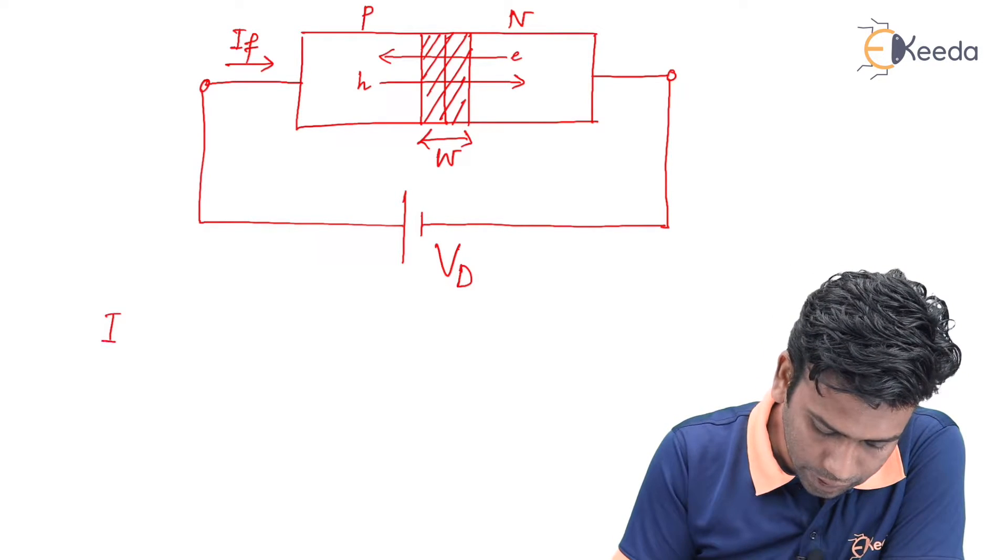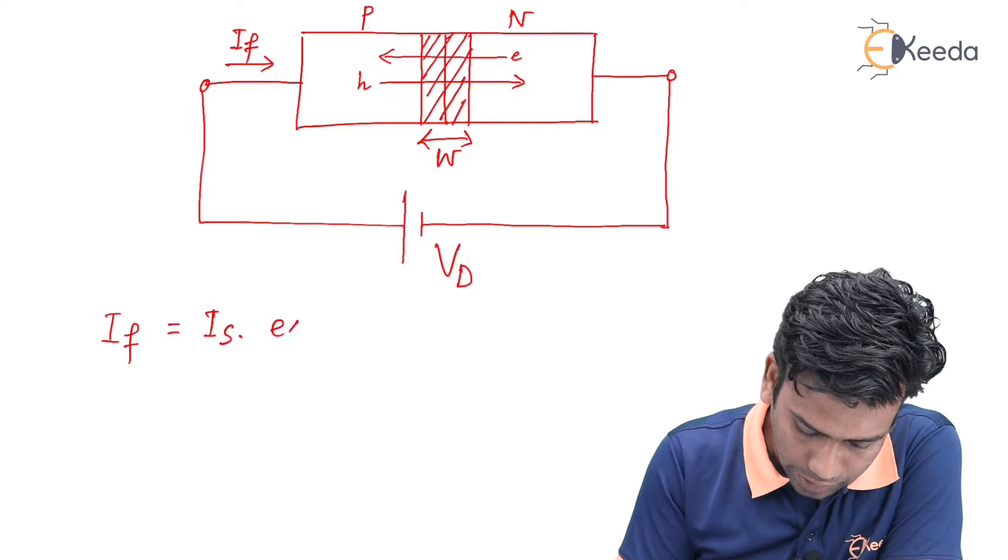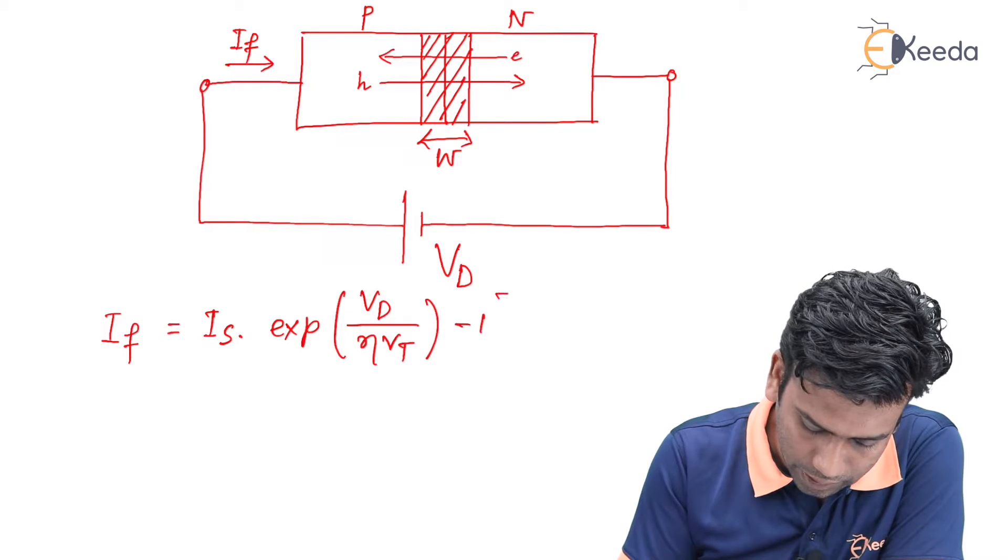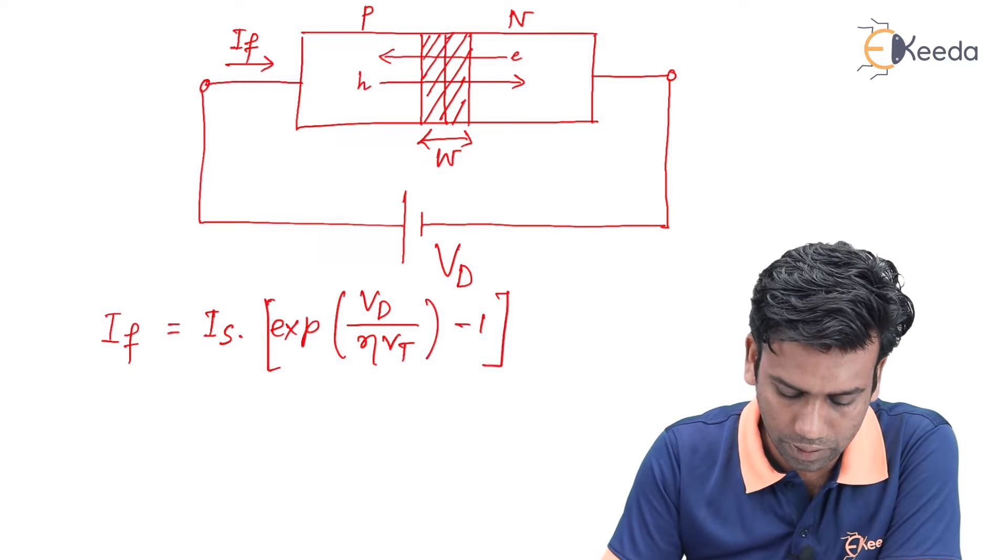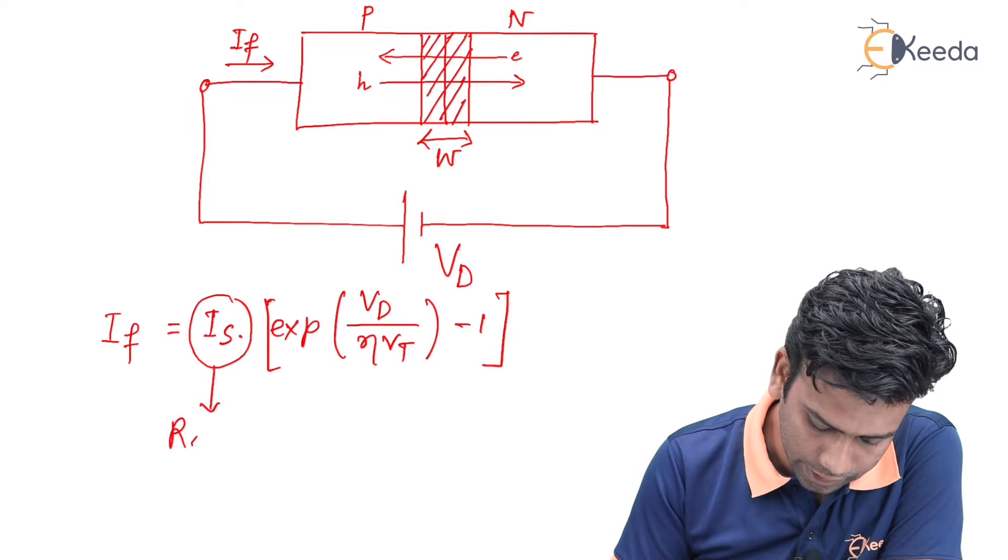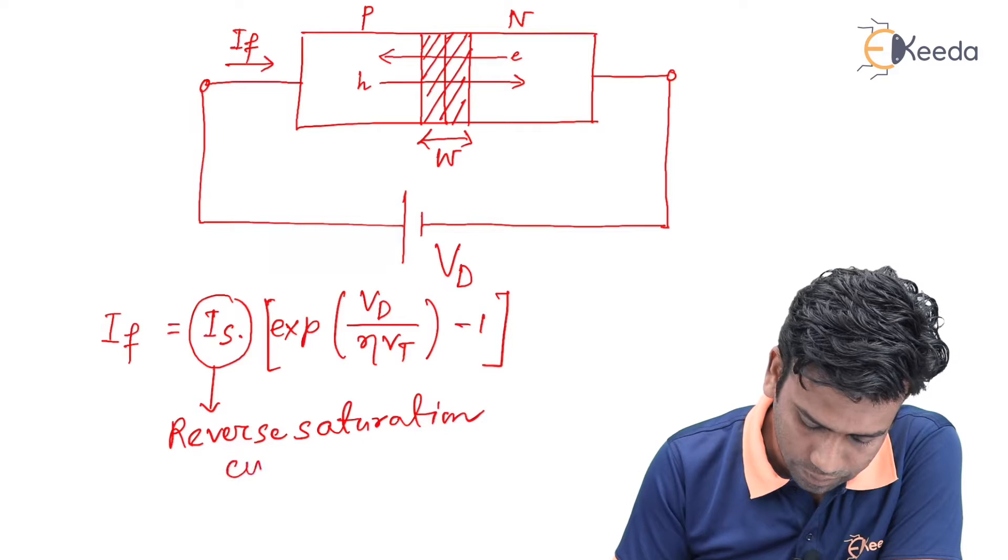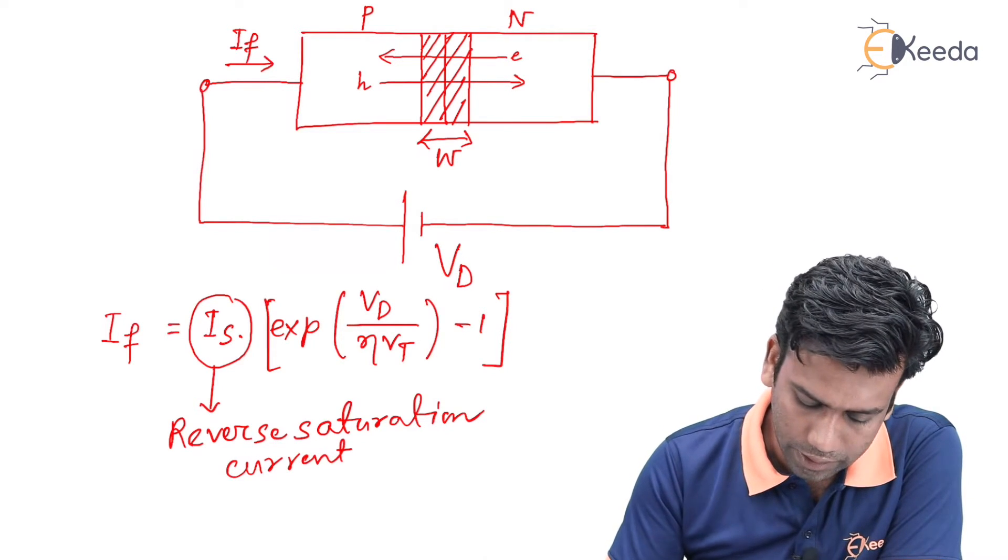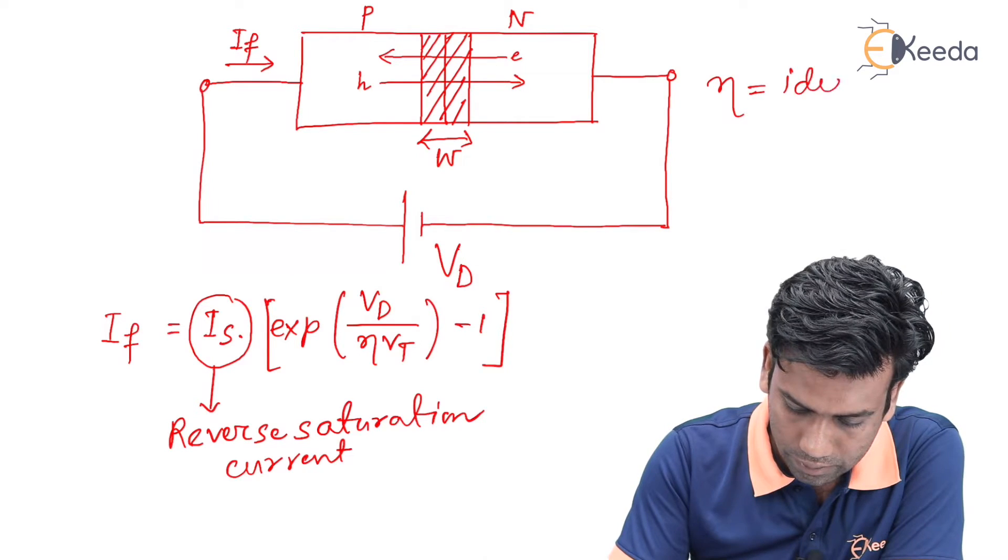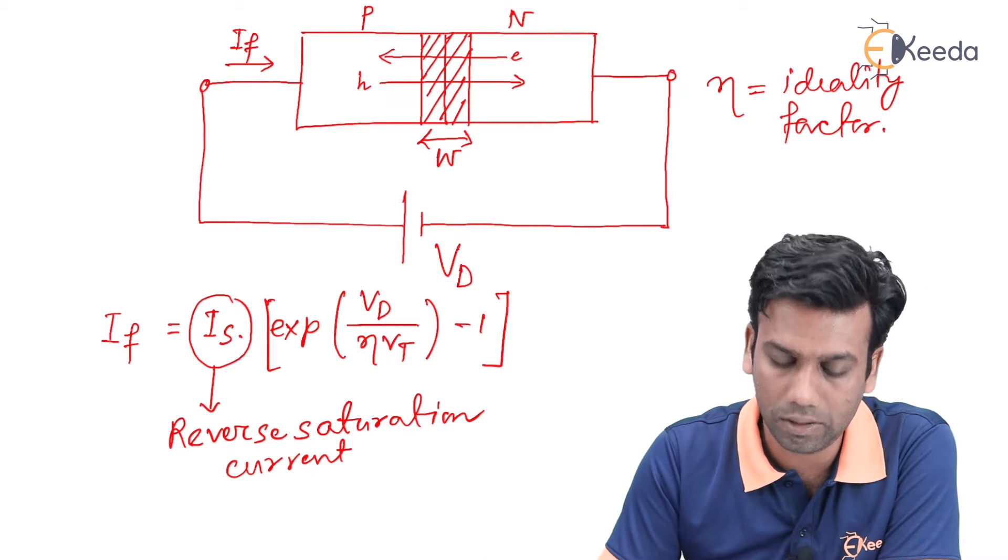We know the diode current equation or forward current equation: I_f equals I_s into exponential V_D by eta V_T minus 1. This is the forward current equation of the diode where I_s is the reverse saturation current. This eta is the ideality factor, and the value of eta for silicon is 2 and the value of eta for germanium is 1.